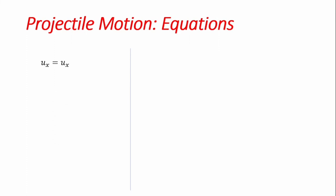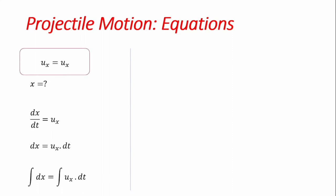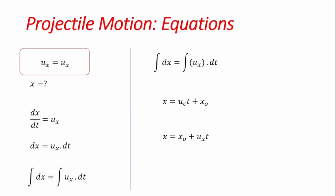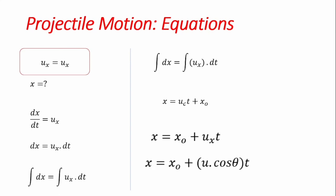Similarly, ux equals u cos theta, which is constant. Using dx/dt equals ux, we multiply both sides by dt and integrate. Since ux is constant, we get x equals ux·t plus x₀, where x₀ is the displacement when time is zero. Substituting ux equals u cos theta, we have x equals x₀ plus u·cos(theta)·t — the equation for horizontal displacement at every point in time.